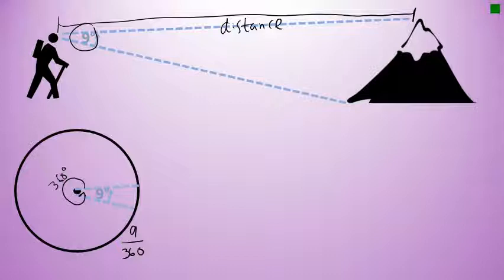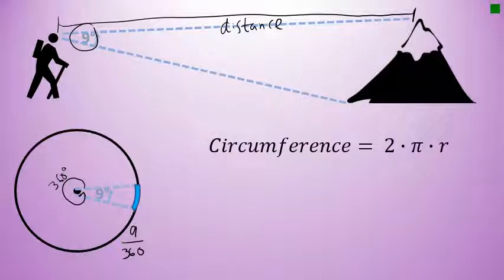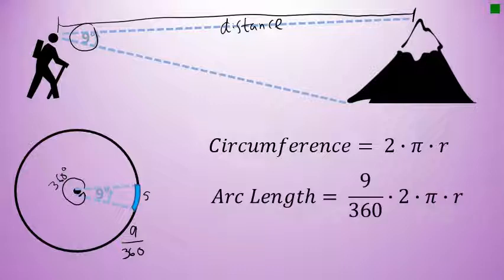In the sector, the mountain would be represented by the arc length of the sector. Arc length is a distance that is a fraction of the entire circumference of the circle. You may recall that the circumference of the entire circle is 2 times pi times r. Since our sector is 9 over 360 of the entire circle, the arc length — this blue curved arc length, often abbreviated s — is that same fraction of the circumference. In the sector of a circle, r is the distance from the center to the edge of the circle, and in our diagram with the hiker and the mountain, r would be the distance from the observer to the mountain.